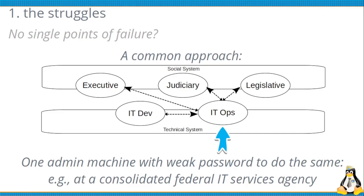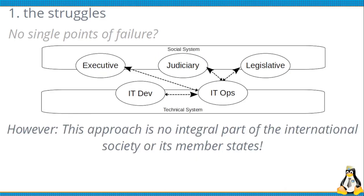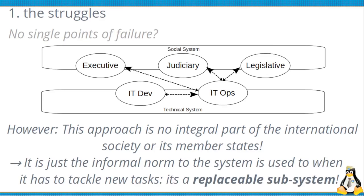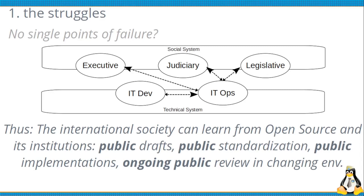We also have to see that security is much more than not getting hacked — it also means offering the services people need. For example, currently in Germany there are big issues with COVID apps that are unable to implement new regulations in an accessible amount of time. This approach is generally not an integral part of the international society — it's an informal, architectural problem of a subsystem, not of the system as a whole. The society develops over time, integrating passive development where it adjusts its behavior and interpretations of norms when traditional interpretations are no longer competitive. The society can learn and interact with open source, public drafts, and public standardization, which leads to distribution and ongoing public review.